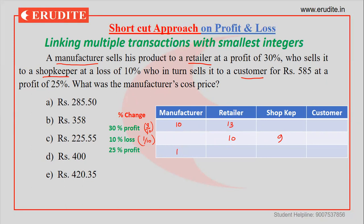Writing here: manufacturer's value would be 100, retailer's value would be 130, and linking further — 3 into 13 — that means the shopkeeper's value would be 117.